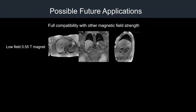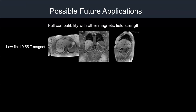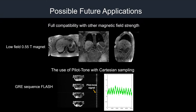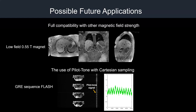Possible future applications of the Pilotone include use at other magnetic field strengths — we tested it on a 0.55 Tesla clinical magnet, reconstructing data with XD-GRASP binned to six motion states. Another possibility is using the Pilotone with Cartesian gradient-echo sequences, which opens interesting possibilities especially for applications susceptible to motion such as diffusion experiments.